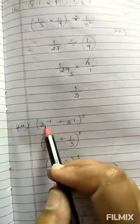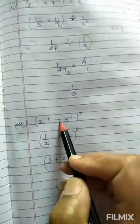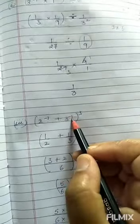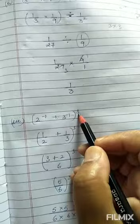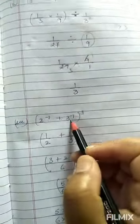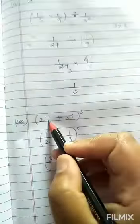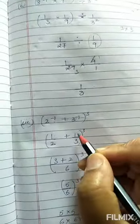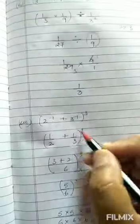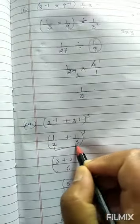2 to the power minus 1 plus 3 to the power minus 1, in bracket, and outside there is a power 3. First solve the bracket children. This can be written as 1 upon 2, and 3 to the power minus 1 can be written as 1 upon 3. Now take the LCM of 2 and 3.